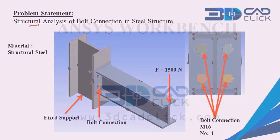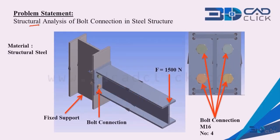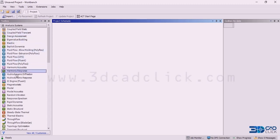Welcome to 3D CAD Click. In this video, I am going to explain how to perform structural analysis of bolt connection in steel structure. This is the setup — we are going to get the column and the beam. At one end we apply the boundary condition — fixed support. The bolt connection has a total of 4 bolts, size M16. At the other end we apply a force of 1500 Newton. The material used is structural steel. Let's get inside the interface of ANSYS — this is the analysis system.